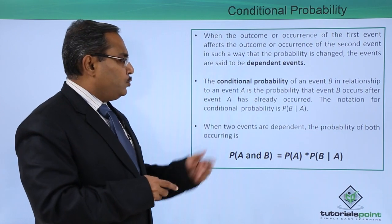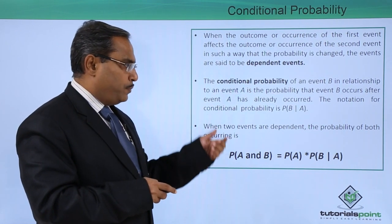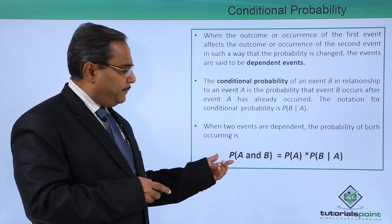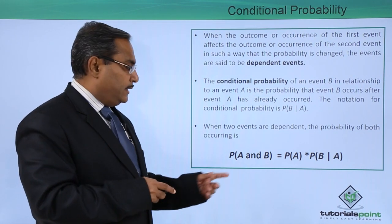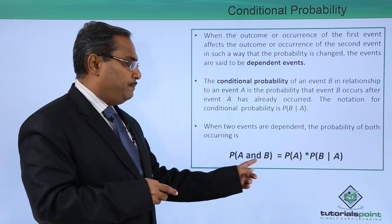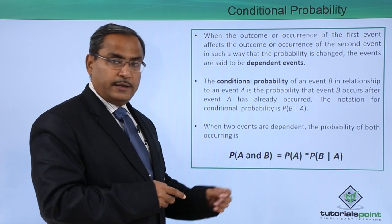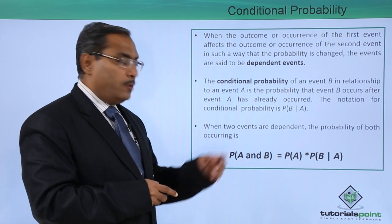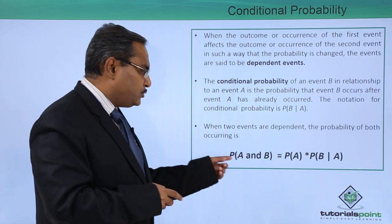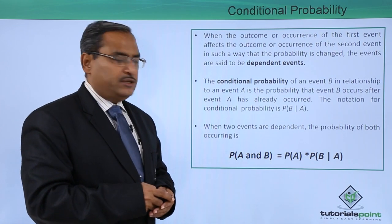When two events are dependent, the probability of both occurring can be expressed as: probability of A and B is equal to probability of A multiplied by probability of B given A.